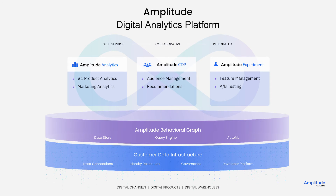Once in the platform, Amplitude's data infrastructure provides data connections, identity resolution, governance, and a developer platform. The data is stored in our database called Behavioral Graph, which powers the rest of our platform.